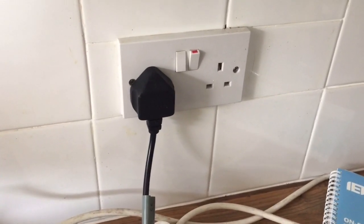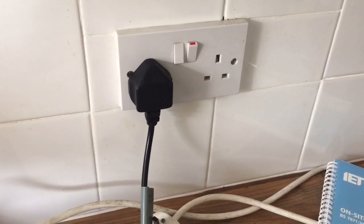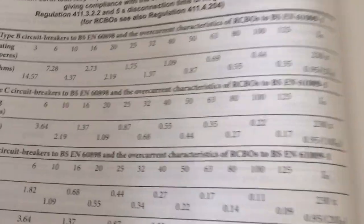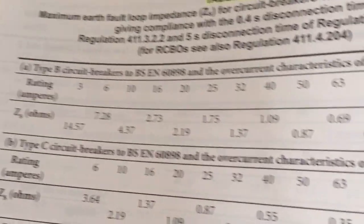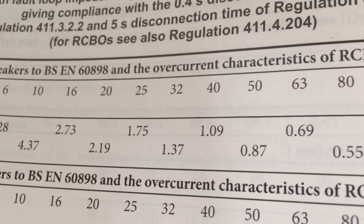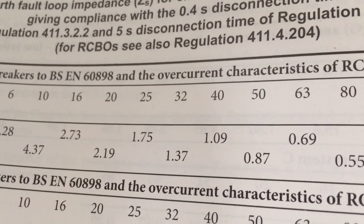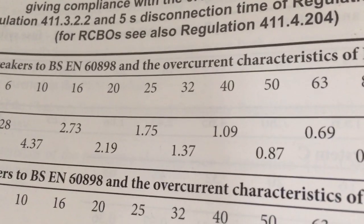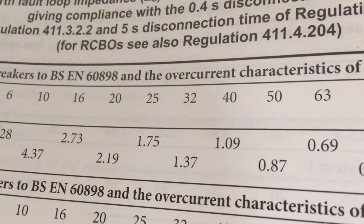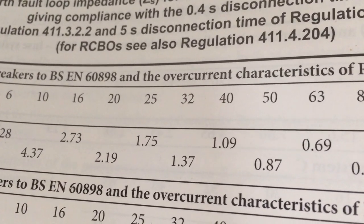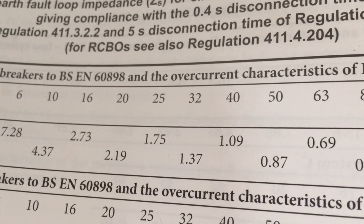I've got the tester plugged into a socket in the kitchen. If we look at expected values and go to the regs, it tells us there for a B-type breaker 32 amp: 1.37Ω, but that is at the conductor operating temperature. Now this is a little thing they like to play on exams — they like to give you the 100% value, because what they want you to do then is to take 80% of that value. It's what's called the rule of thumb for a long time.